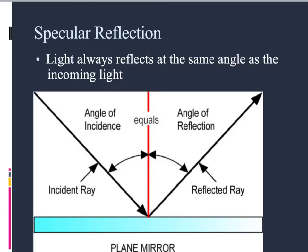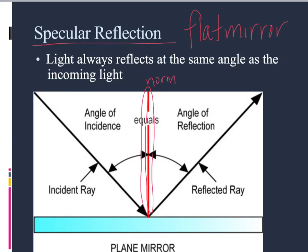So now we're going to look at specular reflection specifically. So think about a flat mirror. That's what we're going to start talking about is our flat mirror now. And whenever we have light coming into a flat mirror, light will always reflect at the same angle as the incoming light. So what we have here is this line here in the middle. This is what we call the normal. And we've talked about this before. It just means that it's at 90 degrees from the surface.